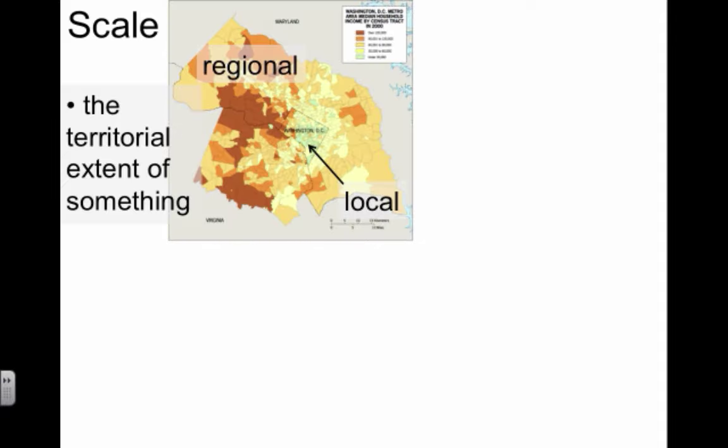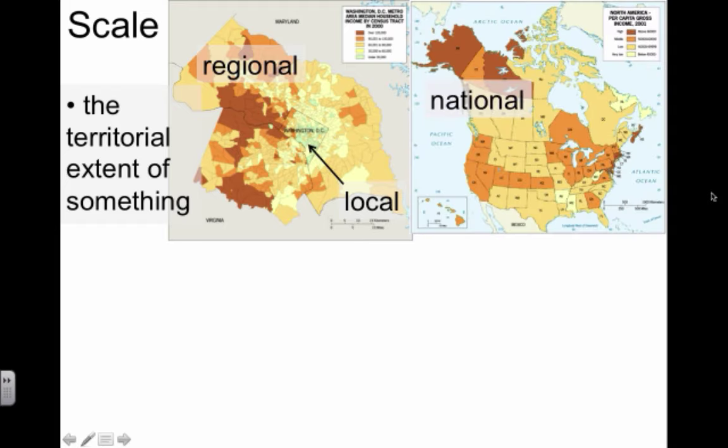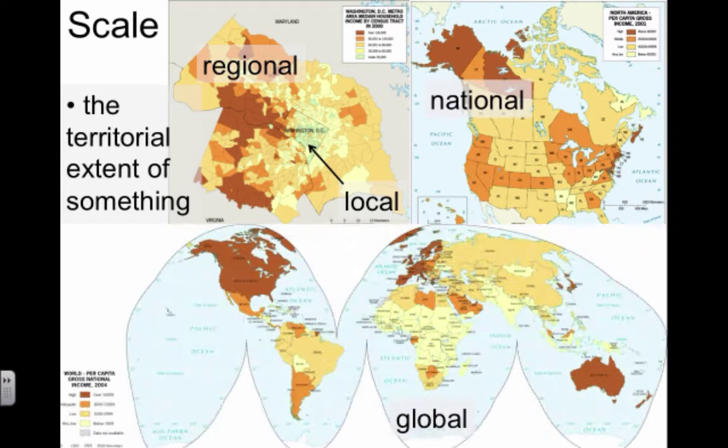Now for a quick word on scale. There are two definitions that are basically contradictory. When you think of scale, what you tend to think of is the territorial extent of something—starting from local scale to regional scale, from something smaller to larger. This is how most people interpret scale: moving to the national level or global, the territorial extent gets larger and larger.